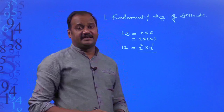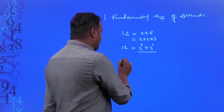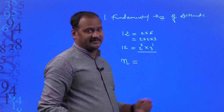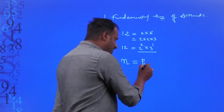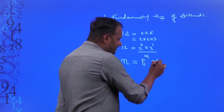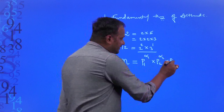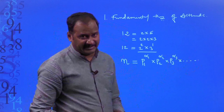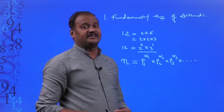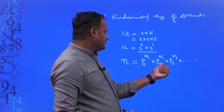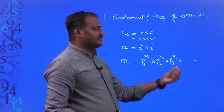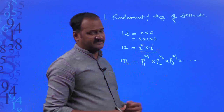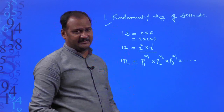The fundamental theorem of arithmetic states that every composite number n can be expressed as the product of different prime numbers in a unique way — written as p1^α1 × p2^α2 × p3^α3 and so on. Here p1, p2, p3 are different prime numbers and α1, α2, α3 are their respective powers. For example, 2 is raised to the power 2 and 3 is raised to the power 1. Every composite number can be uniquely expressed in this form.